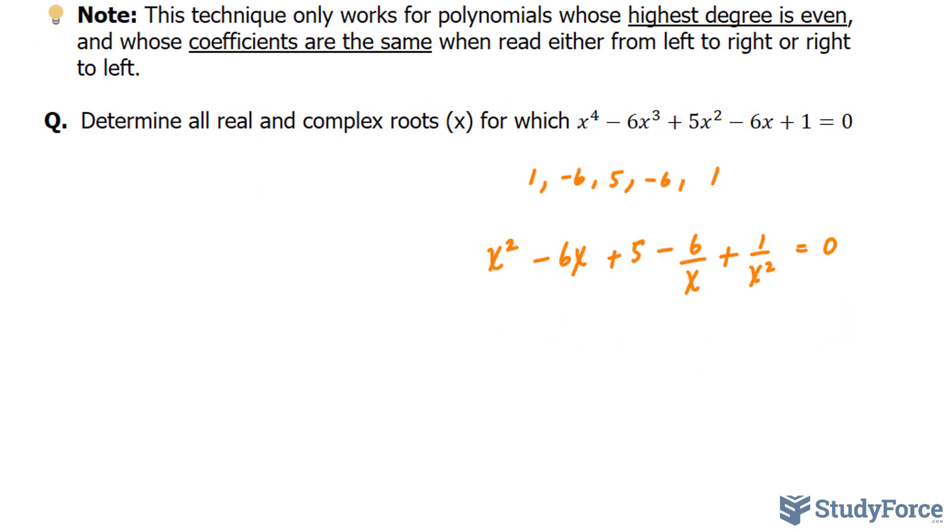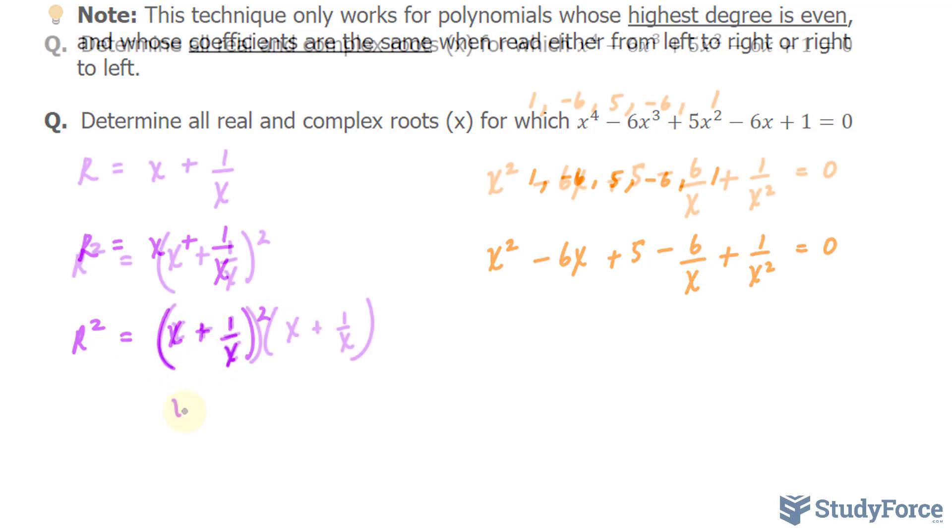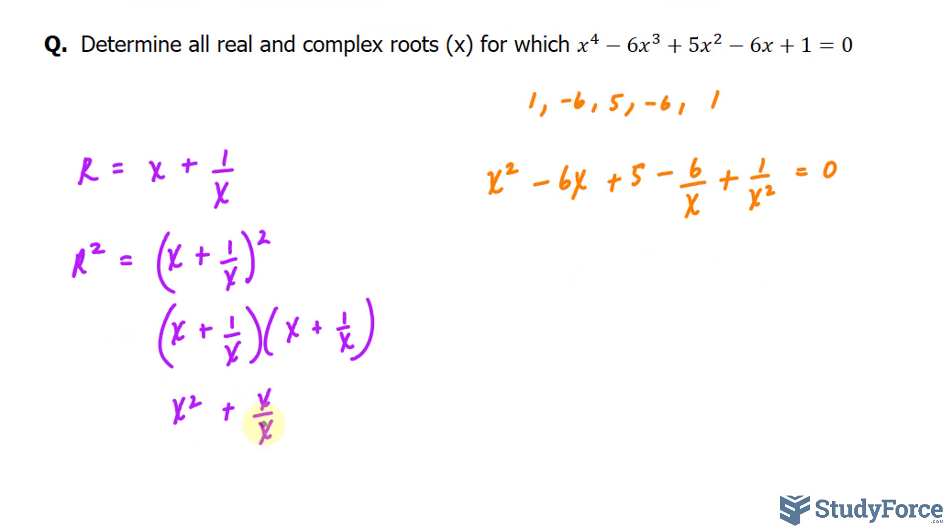Before we continue, I want to do something on the side that will help us throughout the process. Let's set r = x + 1/x. Now it looks like they're not related, but you'll see a connection as we manipulate this. If I squared both sides, we get r² = (x + 1/x)². Expanding this, we get x² + 2(x)(1/x) + 1/x², which simplifies to x² + 2 + 1/x². So r² = x² + 1/x² + 2, or rearranging: x² + 1/x² = r² - 2.